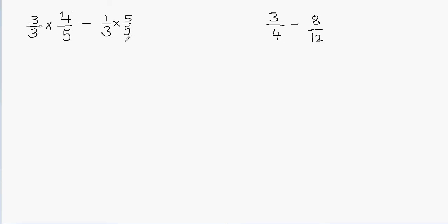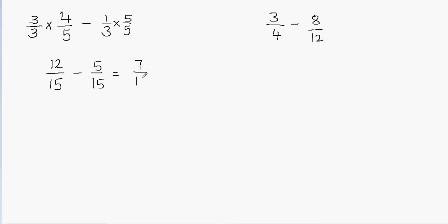By multiplying this fraction by 3 and this fraction by 5, I'm making the denominators equal. You can see that 3 times 5 is 15 in both cases. So multiplying the numerators and denominators: 3 times 4 is 12, and 3 times 5 is 15. Then 1 times 5 is 5, and 3 times 5 is 15. Now 12 minus 5 is 7, and you never subtract the denominator, so the denominator stays 15.